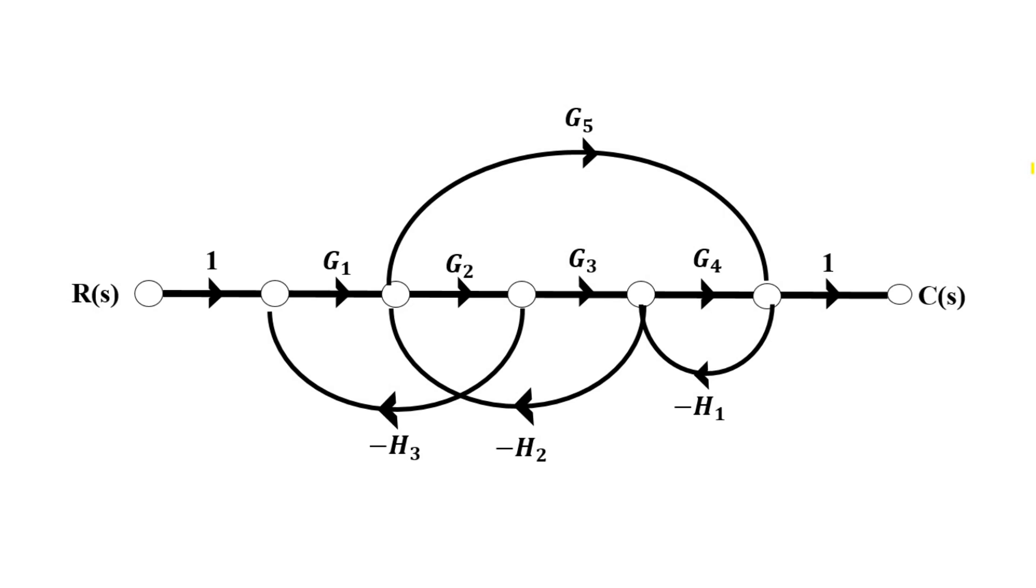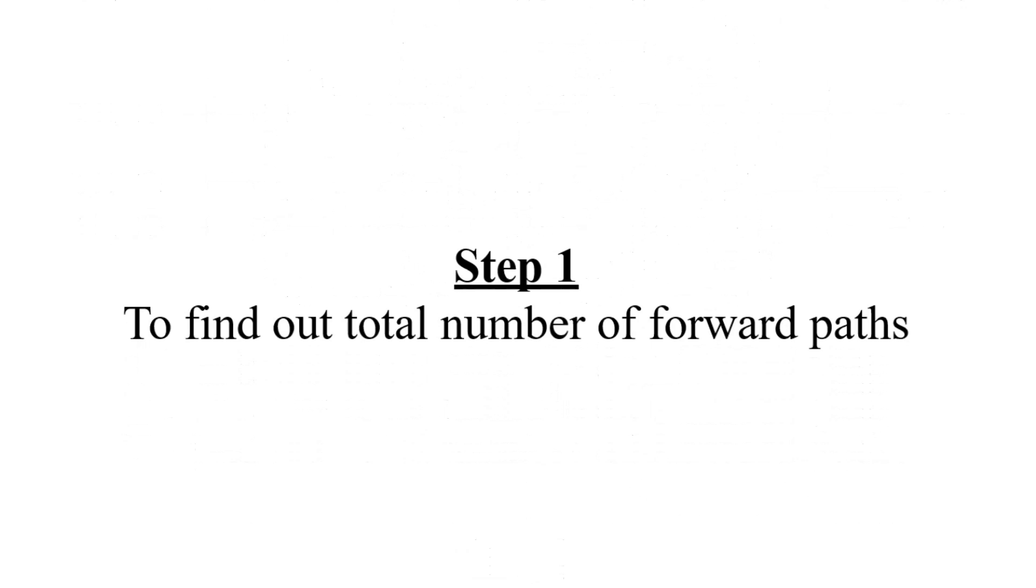Here we are considering this simple signal flow graph where G1, G2, H1, H2 all are gains of different parts of the graph. R is input and C is output. Now we will solve it by Mason's Gain formula.